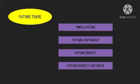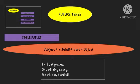Today we have future tense to be covered along with some other portions. First: simple future. The future tense is used to denote an action that will take place — it has not taken place yet but it will happen in the future. We use 'will' or 'shall' in future tense. The formula is: subject + will/shall + verb + object. For example: I will eat grapes, she will sing a song, we will play football.